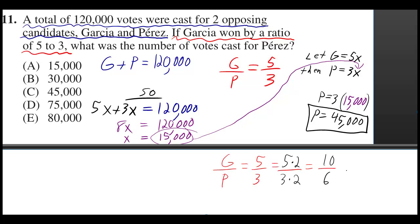If G was 5 and P was 3, that would give us a ratio of 5 to 3. But also, if G was 10 and P was 6, that would give us a ratio of 5 to 3. If you cancel the 2's, it reduces to 5 over 3. Same for 50 and 30.